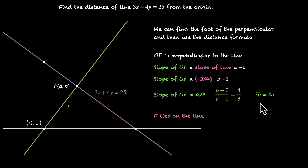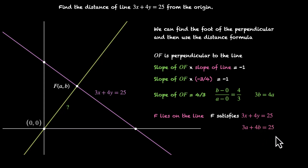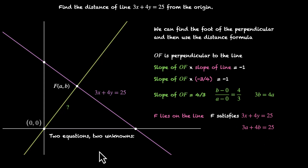For our second equation, F lies on the line, so the coordinates of F satisfy 3x + 4y = 25. Plugging in x = a and y = b, we get 3a + 4b = 25. So we have two equations and two unknowns.